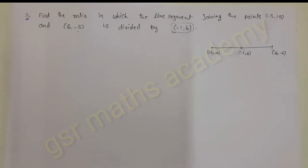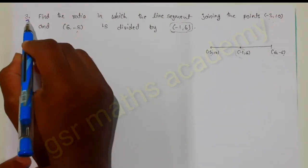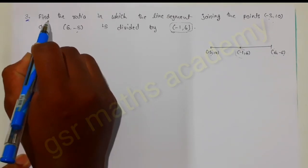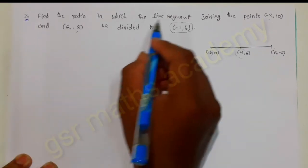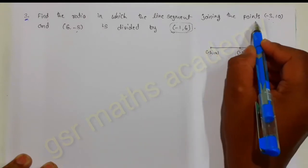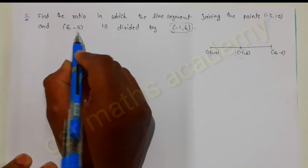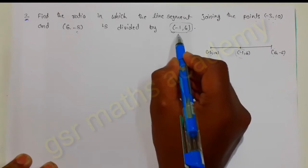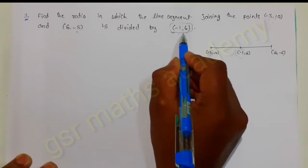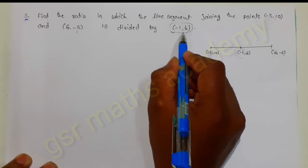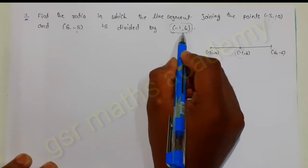Welcome to GSR Mass Economy. We are going to discuss the third problem of Exercise 7.2. Let us read the question: find the ratio in which the line segment joining the points minus 3 comma 10 and 6 comma minus 8 is divided by the point minus 1 comma 6. That means we need to find out in which ratio this point minus 1 comma 6 divides the line segment.